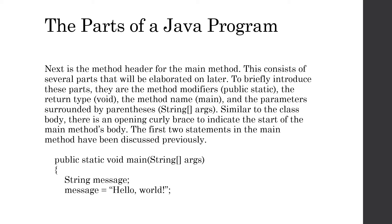The main method header will be elaborated on later, but to briefly introduce each part: we've got the method modifiers, which use the keywords public and static. We also have the return type, which is void. Then we have the method name, which is main. And finally, we have the parameters surrounded by parentheses - in this case, String with a pair of brackets and then args. We'll explain more about precisely what that means as well.